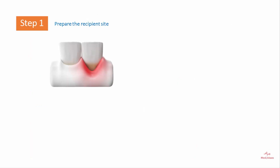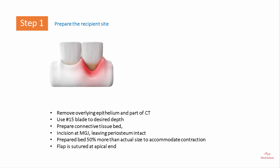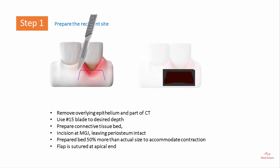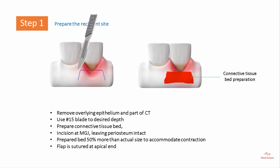Step one — preparation of the recipient site — involves removal of the overlying epithelium and part of the connective tissue. A number 15 blade is used to the desired depth and a connective tissue bed is prepared. The incision begins at the mucogingival junction, leaving the periosteum intact. The bed prepared is 50% larger than the actual size to accommodate contraction, and the flap can be sutured at the apical end.